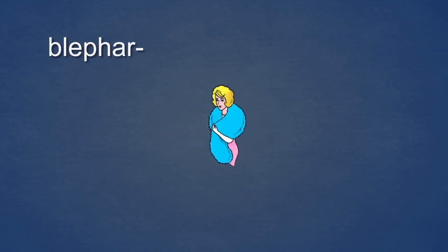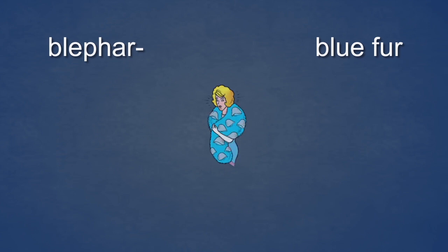Next, the element Blefar. Blefar sounds a little like blue fur. Here is a lady wearing a blue fur. Blefar means eyelid. So as you look at the blue fur, all of a sudden it is covered with eyelids — they even wink at people walking by. Imagine the blue fur with eyelids all over it and you won't forget that blefar means eyelid. Blefar. Blue fur. Eyelid.